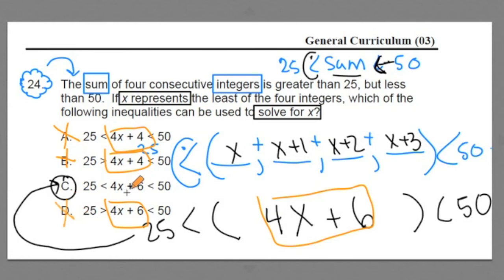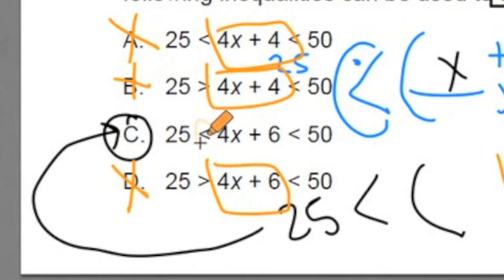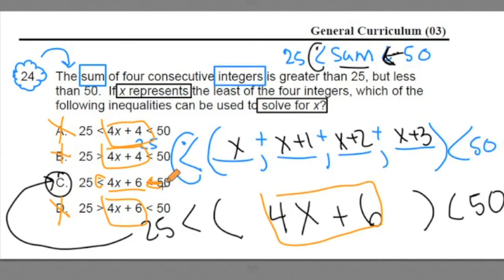Whenever you have these inequalities, remember that Pac-Man thing. This is pointing to the larger value. So when we read it, that's 4x plus 6 is greater than 25. And this arrow created by the inequality is pointing to the smaller value, so 4x plus 6 is less than 50. This is Chris Abraham from Go Academy. I hope you enjoyed this video. Have a great day. Take care. Bye-bye.